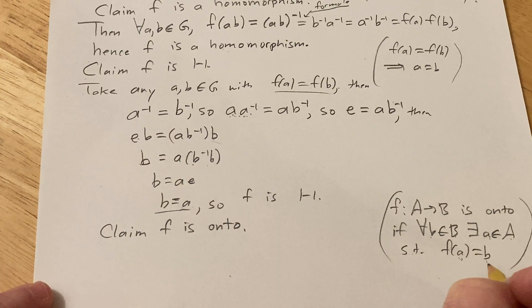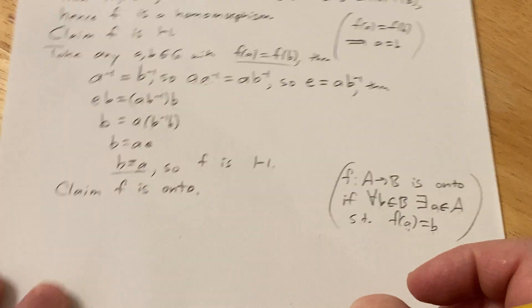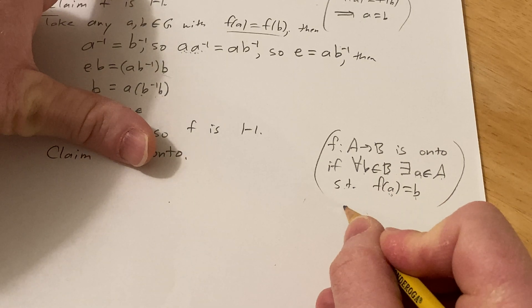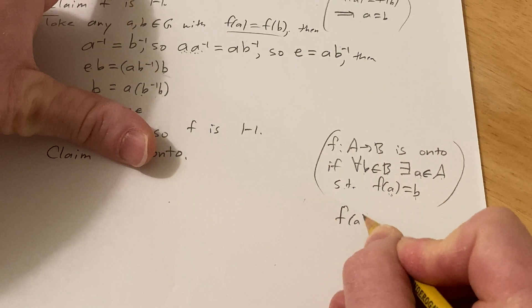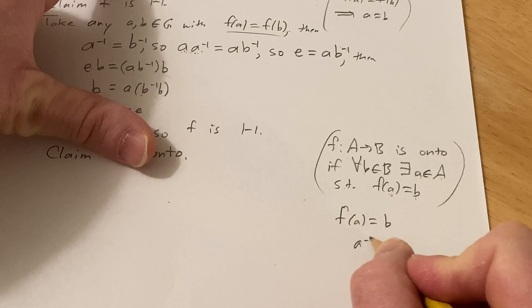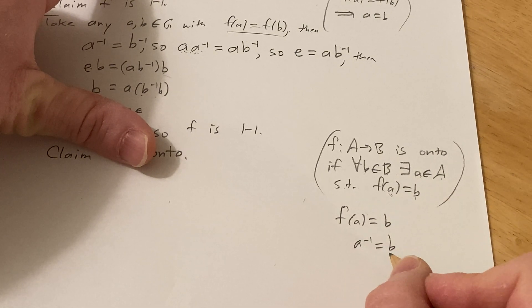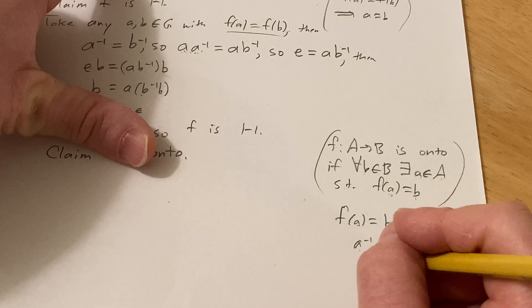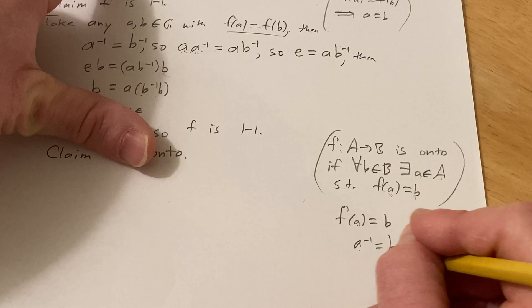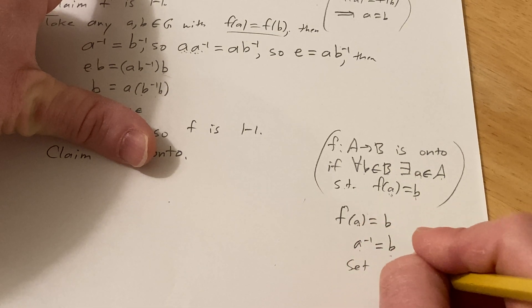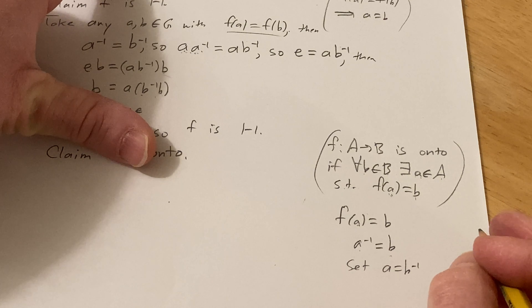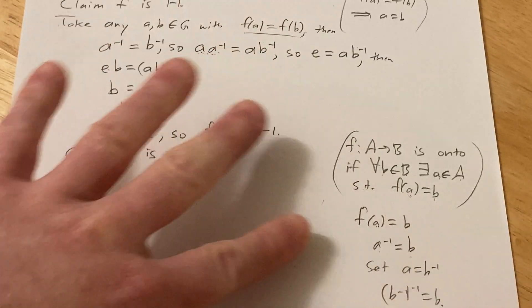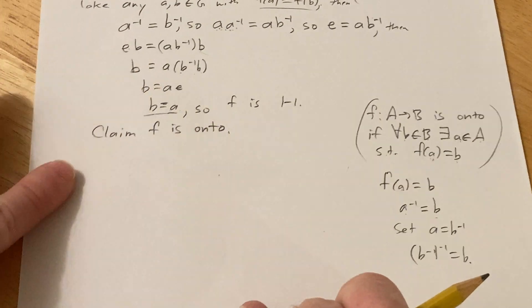So we start, let's just try to work it out here on the side and then try to fill in our proof over here. So let's say we had a little b, so we would want, so we need f(a) to be equal to little b. That's what we want, right. So we need a inverse to be equal to little b. So what's going to make this true? What choice of little a can we make so that this equation is true? Well, b inverse, right. If we set a equal to b inverse, then b inverse inverse is going to be b. So now let's just formalize it in our proof. So I'm going to do all of this again more carefully here.